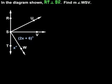In this problem, we're given that line RT is perpendicular to line SV and we're asked to find the measure of angle WSV.